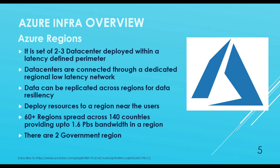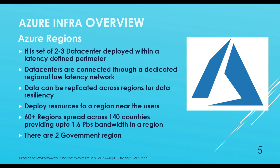There are two government regions whose locations are kept secret and are not made public. Otherwise, the other regions are made public and can be located from the map.